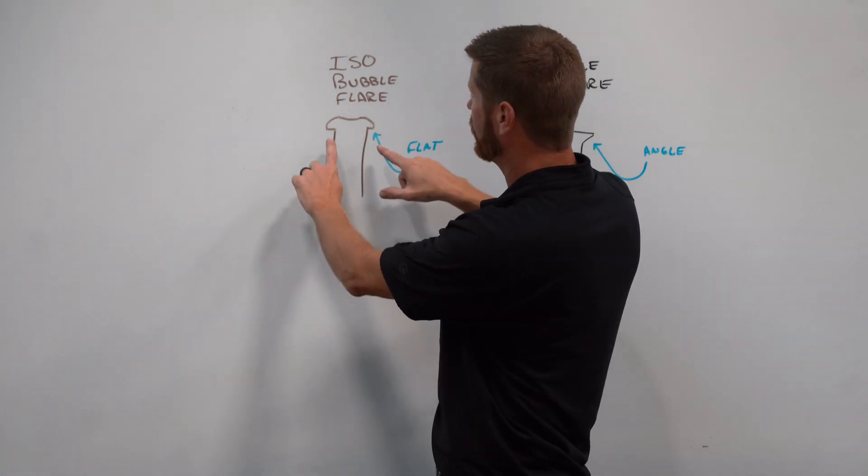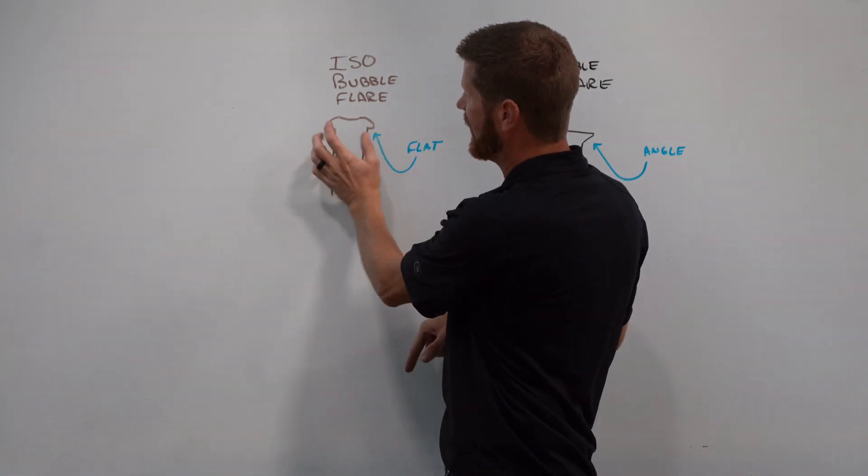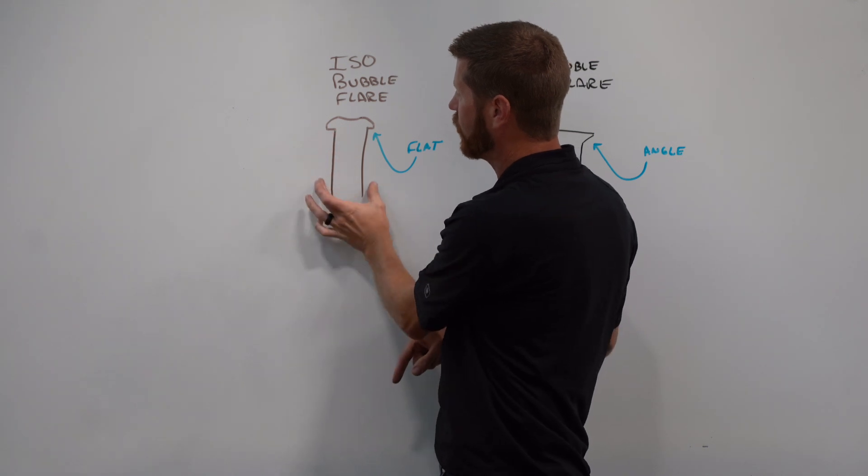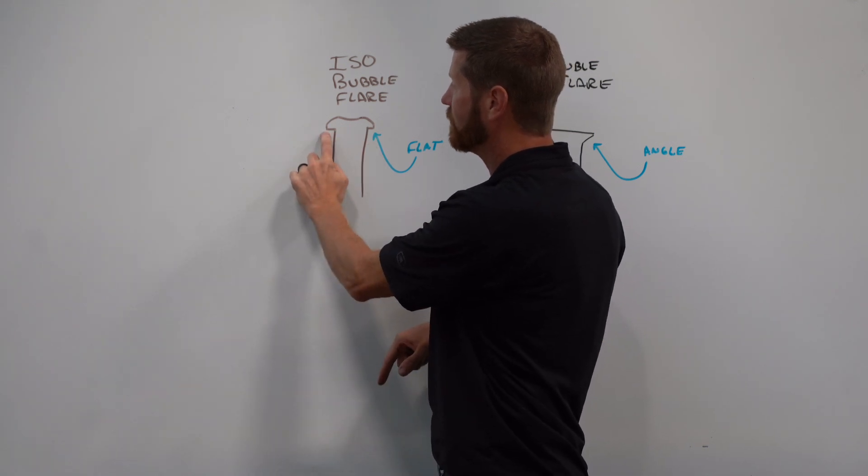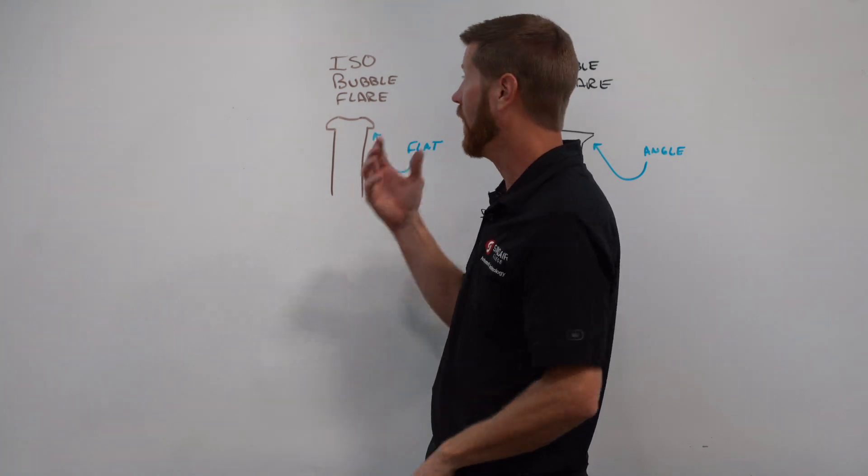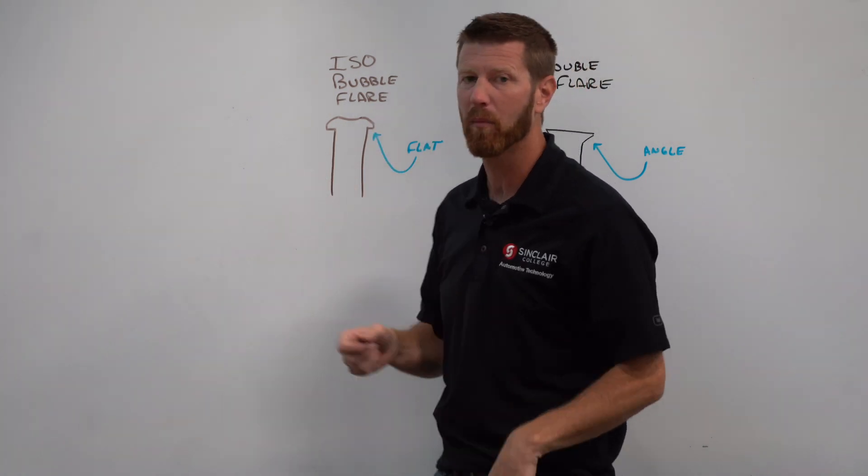The easiest way to tell the difference is if you look at the back of the flare. So if this is the end of the line, the back of the flare where the flare nut goes, this part is actually flat. That's the ISO or the bubble flare.